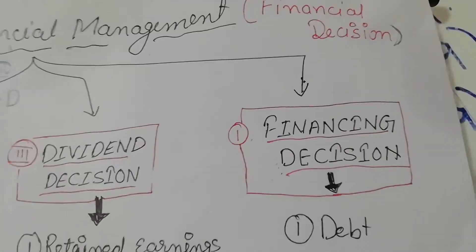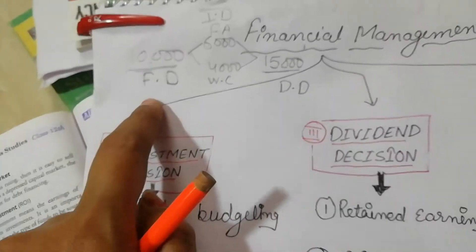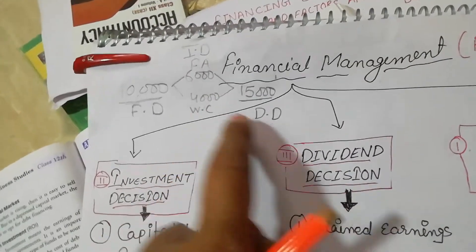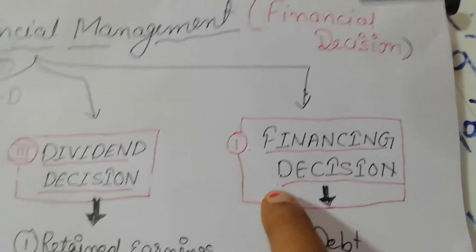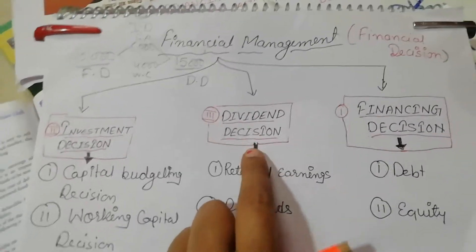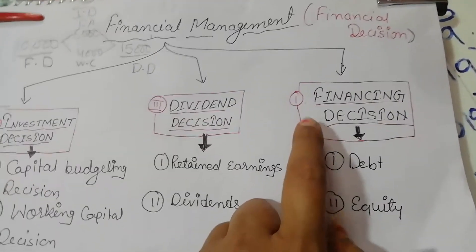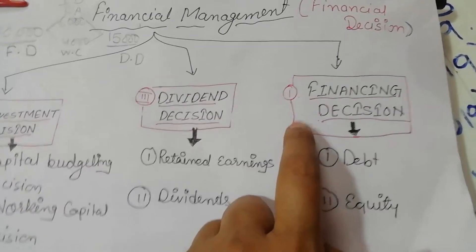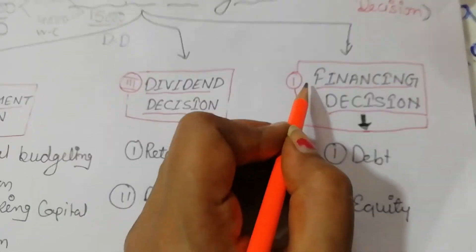Look at this. First, the financing decision. Second, the investment decision. Third, the dividend decision. Again: the financing decision means from where we collect the finance, how do we collect the finance to start the business.